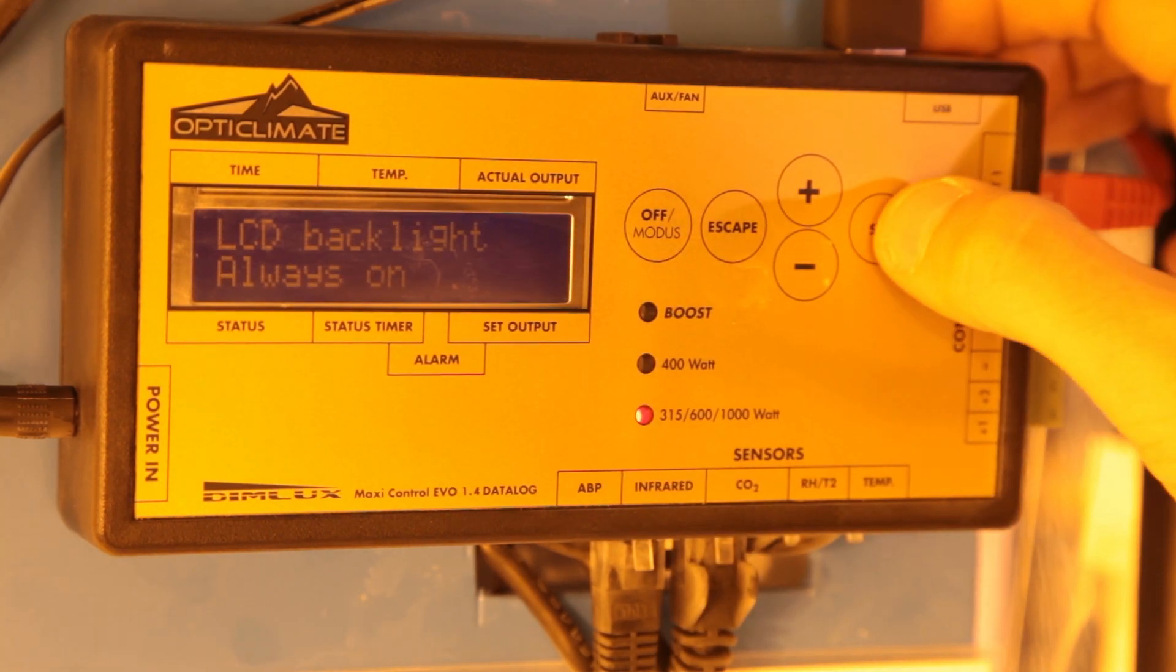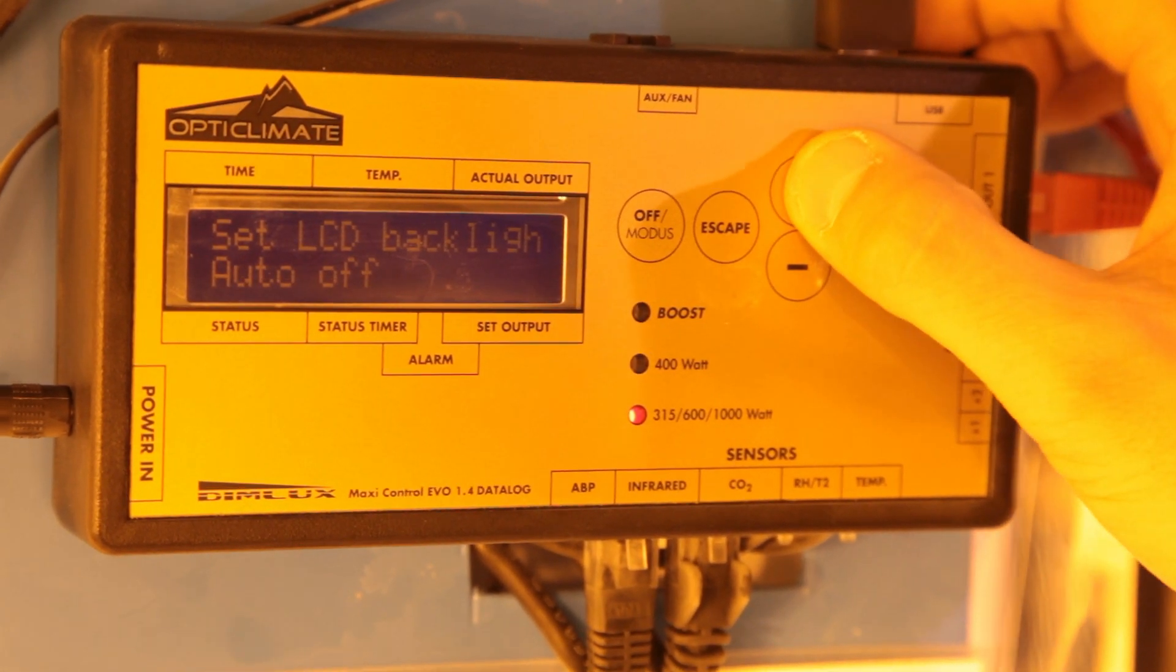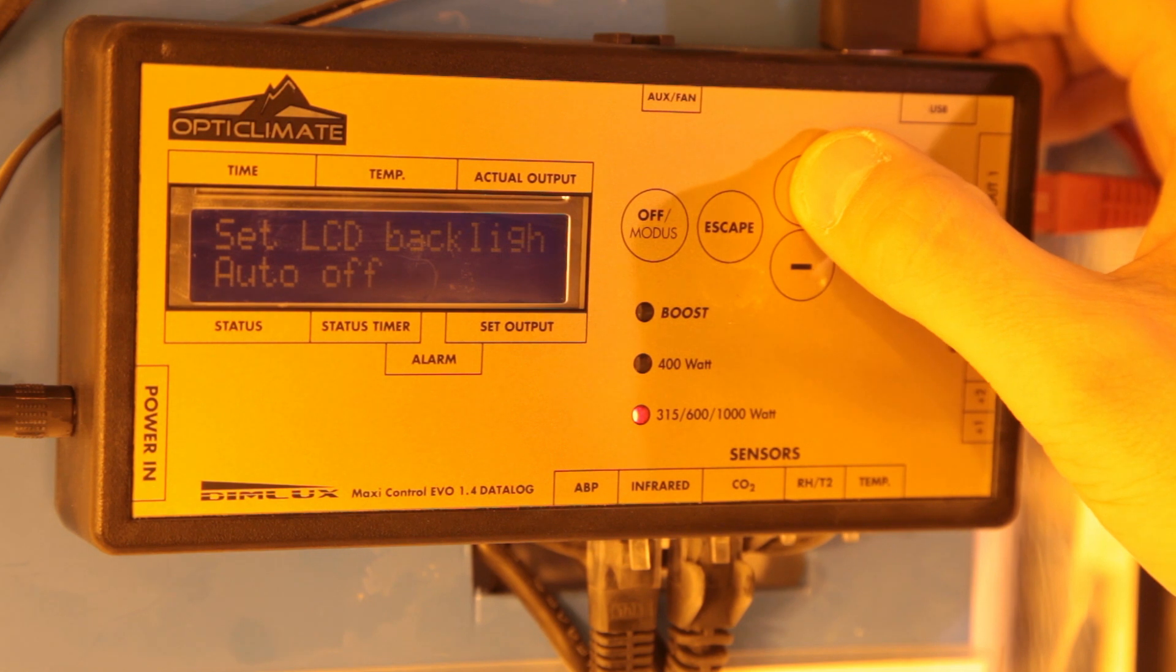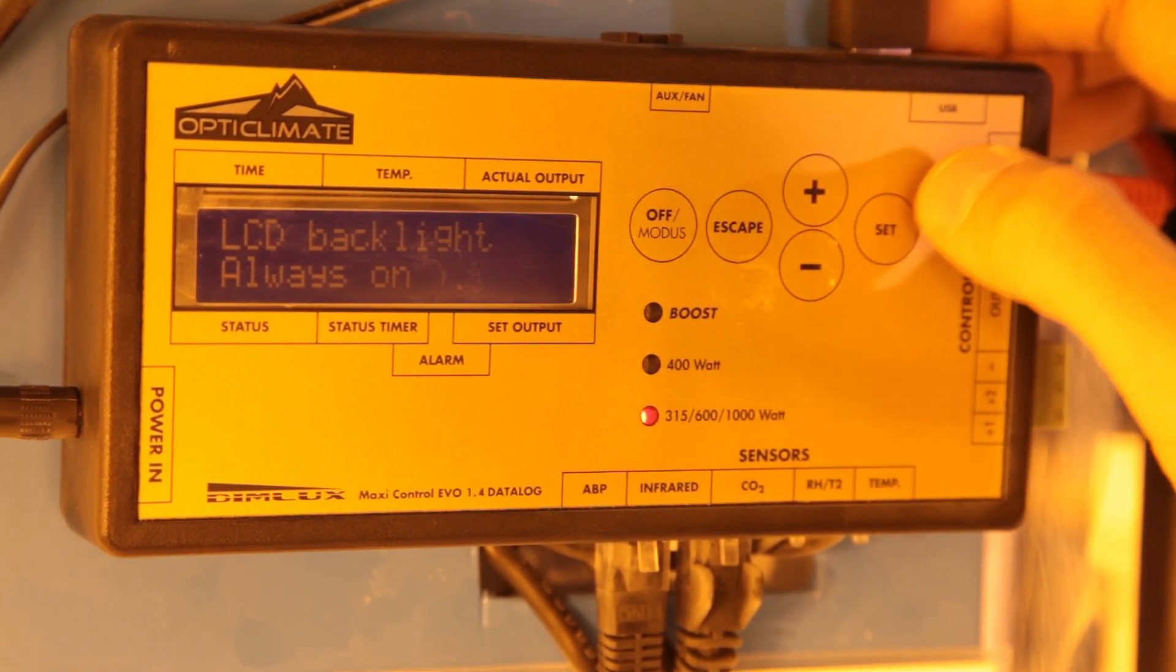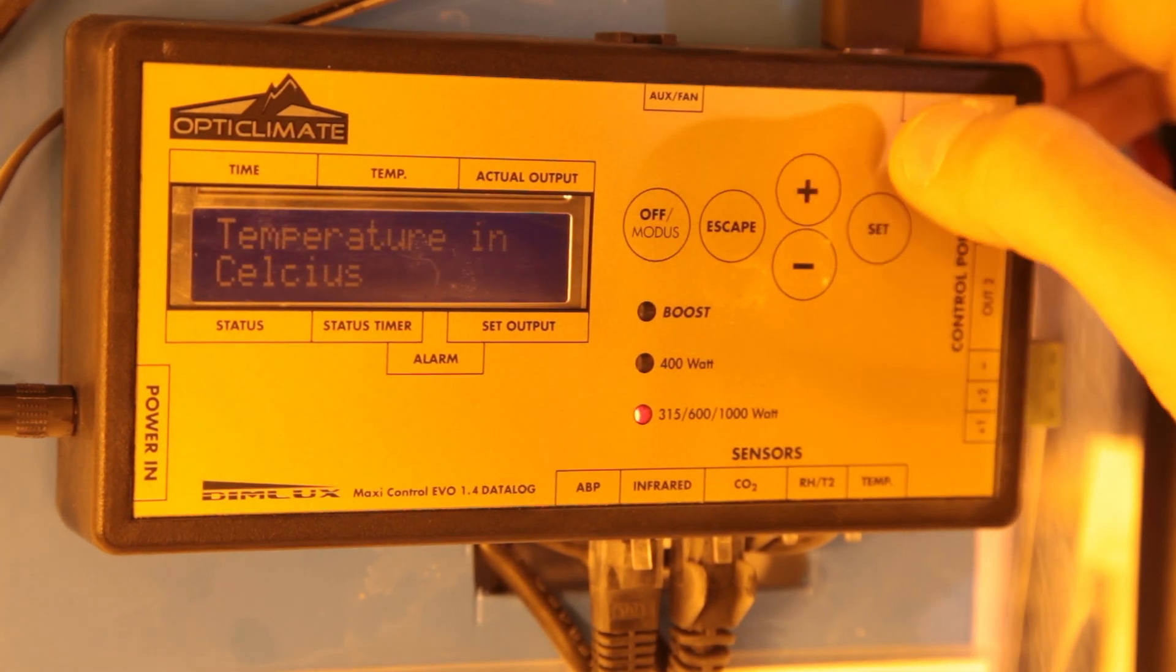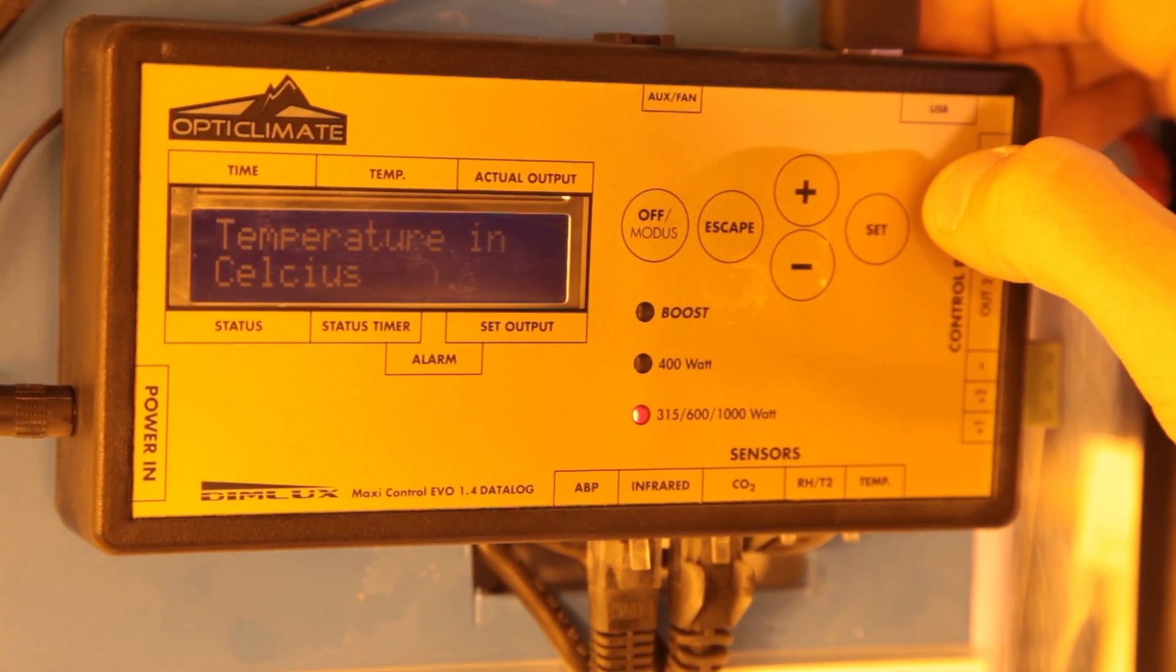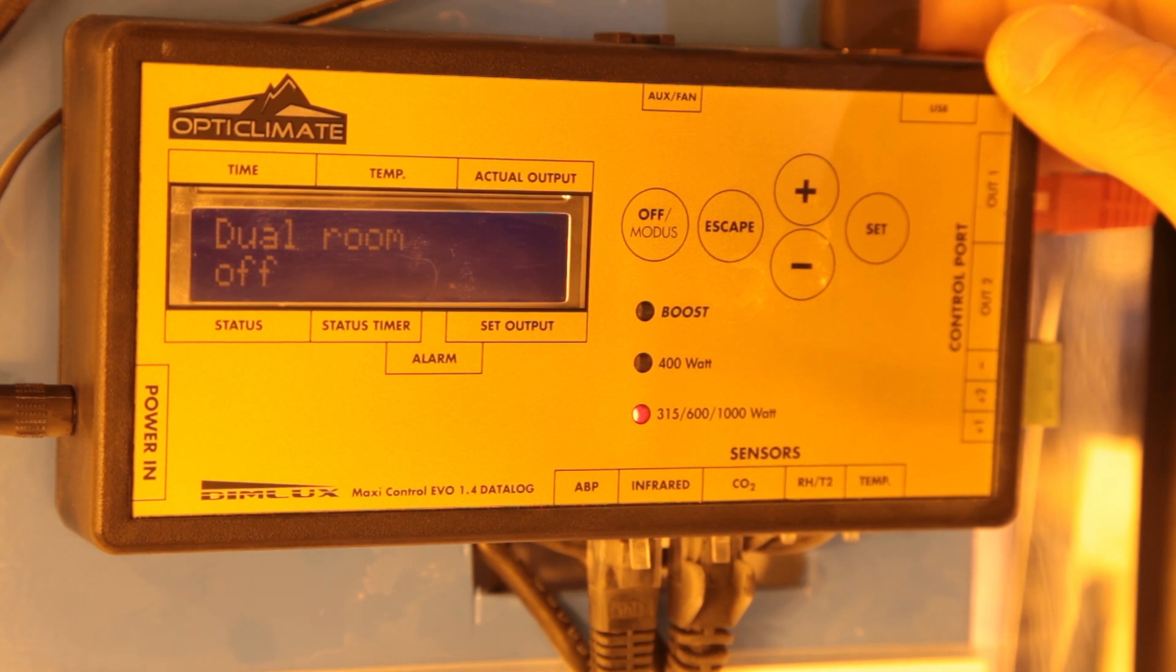The next setting controls the LED backlight so that it either stays on permanently or automatically switches off when not in use. We'd recommend automatically switching it off. On the next screen you can choose between Celsius and Fahrenheit and finally as the name suggests dual room mode is for running two rooms at the same time so that light periods alternate from room to room.